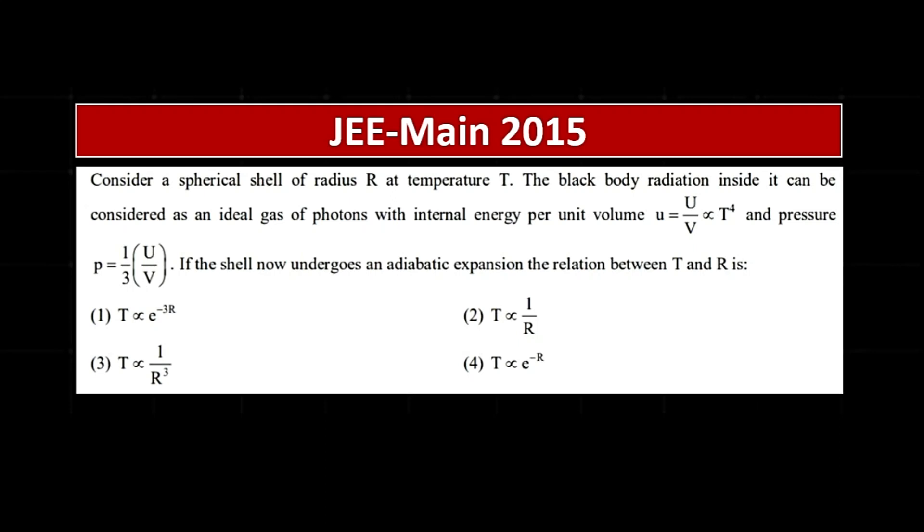Let's see this 2015 question from thermodynamics. The question states: consider a spherical shell of radius R at temperature T. The black body radiation inside it can be considered as an ideal gas of photons with internal energy per unit volume.